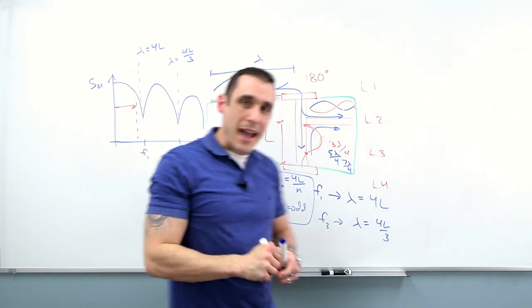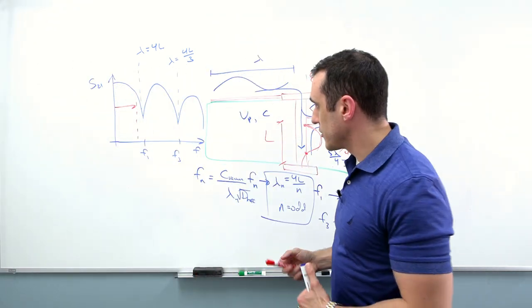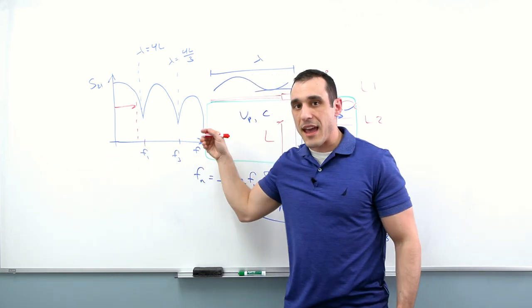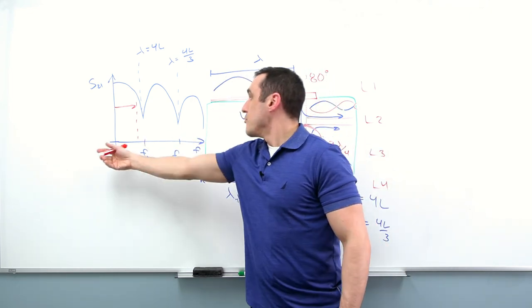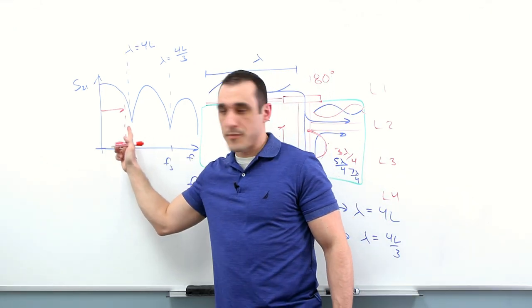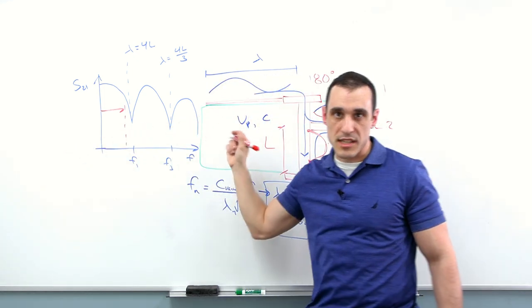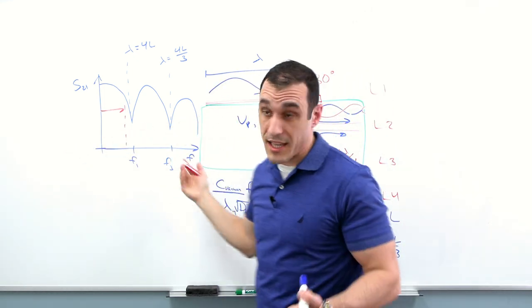So that's why we always say back drilling is needed on high speed signals. It's because you're increasing the bandwidth of the channel by moving these valleys in the S parameter spectrum all the way out to higher frequencies or as high as you can possibly get them.